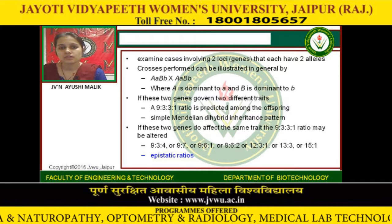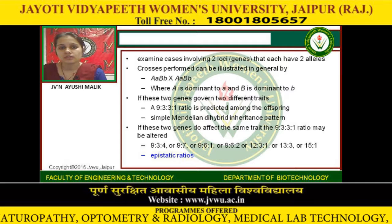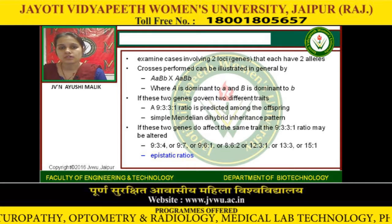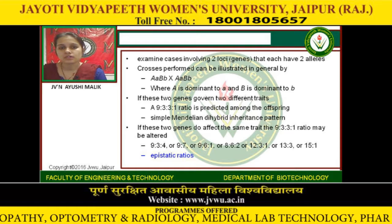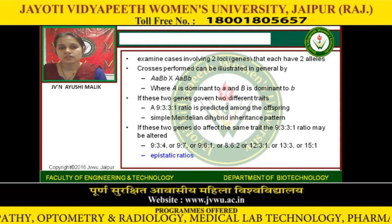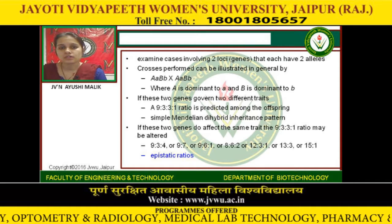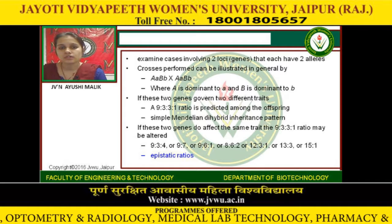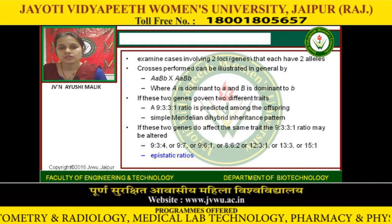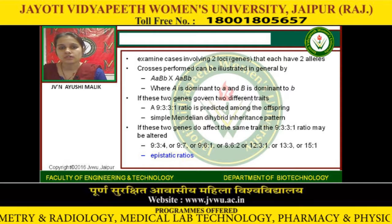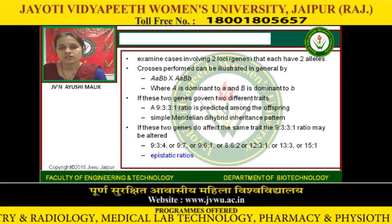Examine the case involving two loci that each have two alleles. Crosses performed can be illustrated in general by dominant A, recessive a, and dominant B, recessive b — crossed with the same dominant A, recessive a, dominant B, and recessive b — where capital A is dominant to small a, and capital B is dominant to small b.